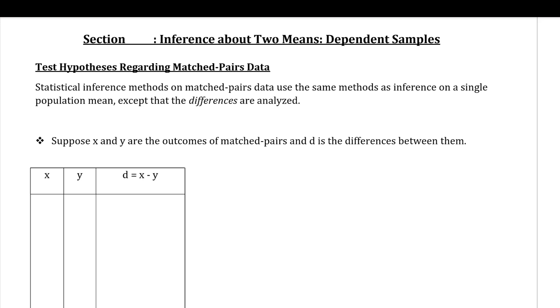You can have the height of one parent and the height of their adult offspring, and you can see if there's any significant difference between those two heights. Another example of matched pairs could be that we can actually have two samples, but all from the same person.